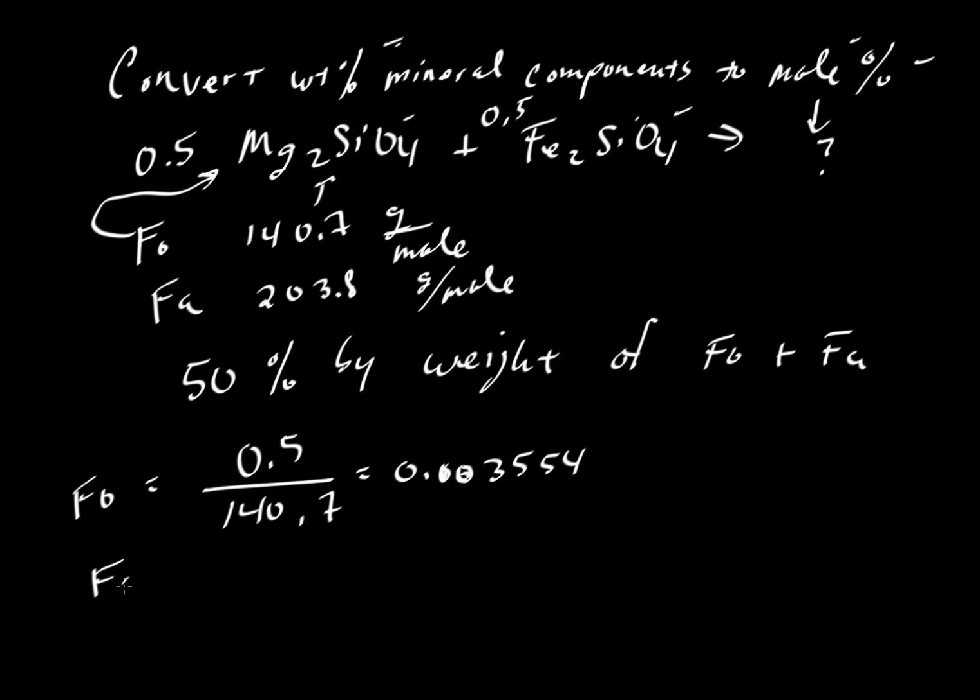And if we do that for fayalite, the same kind of calculation, we have 50%, and we're going to divide it by its weight, 203.8 grams per mole. We'll get another tiny value, 0.002453, or thereabouts. So we'll take the sum of these two things, these molecular proportions, and we get 0.006007.